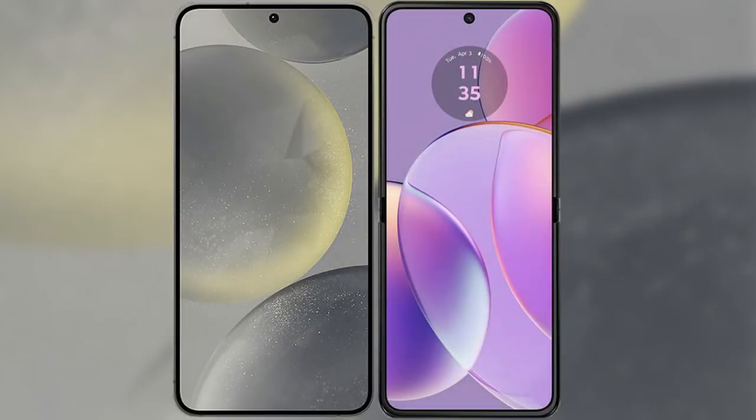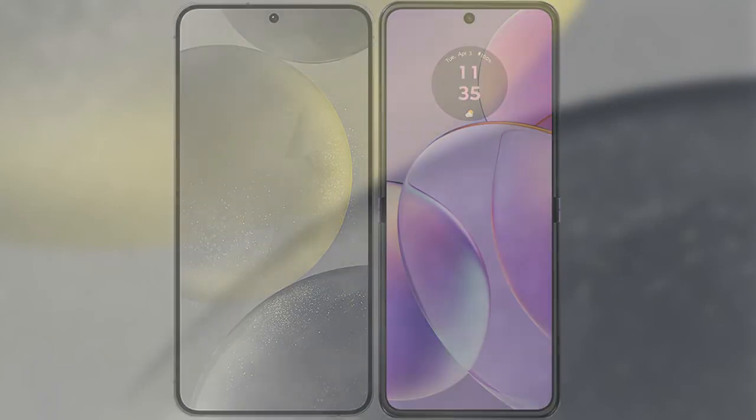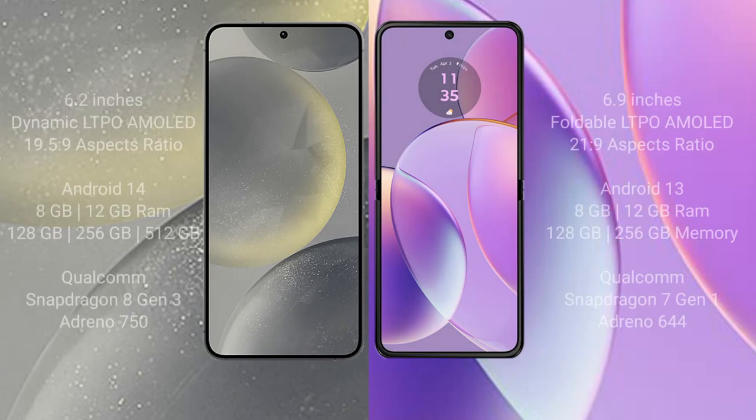I will compare the new Samsung Galaxy S24 with Motorola RAZR 40. Samsung Galaxy S24 comes with a 6.2-inch Dynamic LTP AMOLED Display and Supervisor 19.5:9. Motorola RAZR 40 comes with a 6.9-inch Foldable LTP AMOLED Display and Supervisor 21:9.